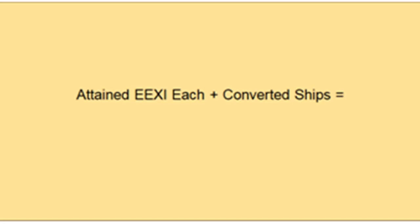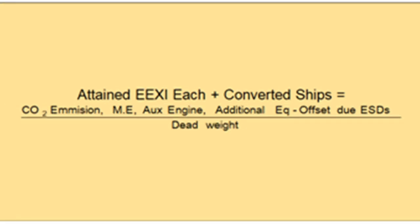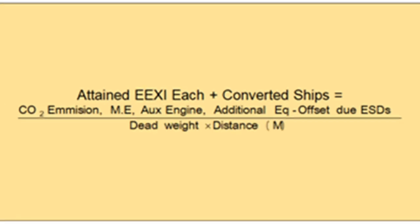The units for EEXI are the same as for EEDI. Attained EEXI is calculated for each ship, including a ship which has undergone major conversion. It is calculated with the help of a technical file containing all the details required, including the procedure. It will be calculated by the administration or a recognized organization approved by the administration, using the IMO guidelines for EEXI calculation.